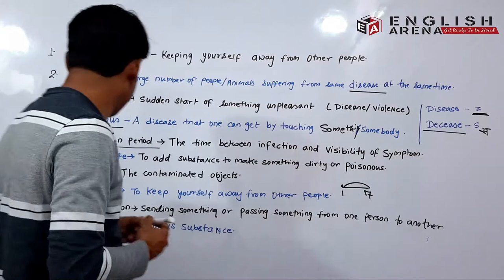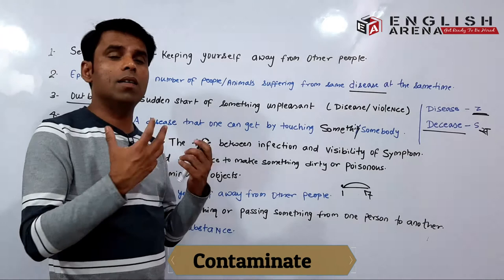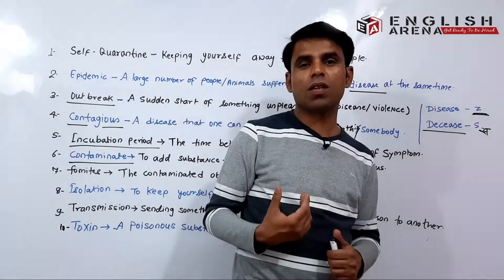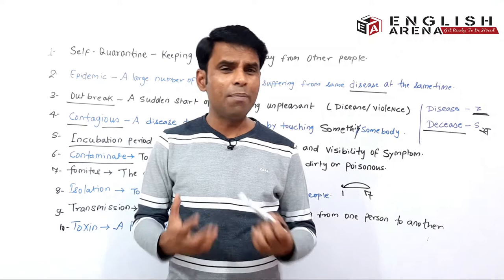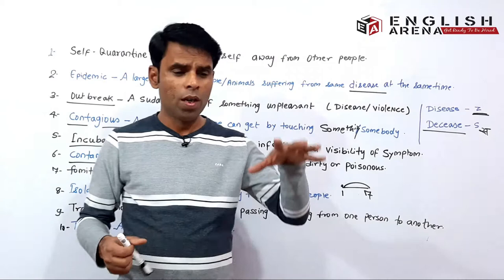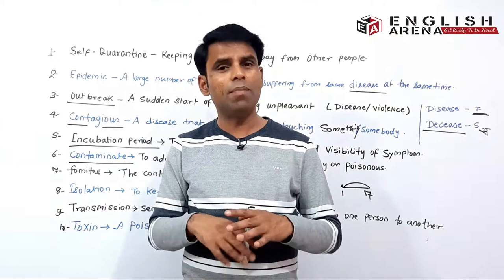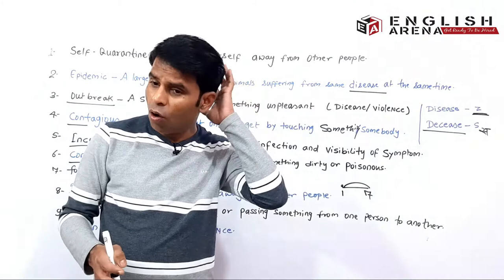The next word is 'contaminate.' Contaminate means to add a substance to make something dirty or poisonous. Yaani koi cheez kisi cheez mein milana jiske milaane ki wajah se woh cheez gandhi ho jaati hai ya zeherili ho jaati hai — use hum kehte hain 'contaminate.' Maine ek movie dekhi thi — Punjab se related movie thi — jisme chemicals, zeherile substances the, unko zameen mein illegally dispose kiya jaata tha, jo pani mein mil gaye the, jiske wajaah se us area ka paani contaminated ho gaya tha, aur iske peene se logon ko cancer ho raha tha. So for example, agar paani mein aisi cheez mila di jaaye jisse paani zeherila ban jaata hai, toh hum kahenge that is 'contaminated water.'